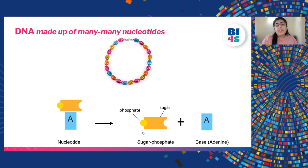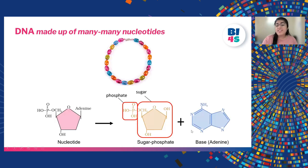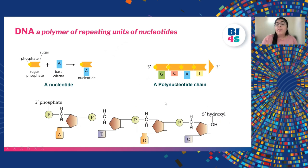If I further look at its components, a nucleotide is made up of sugar, phosphate, and a base. This is how the actual structure of a nucleotide looks like — you can see the ring structure of the sugar and the phosphate group attached to it, and also the ring structure of the base. This is an example of a base known as adenine.